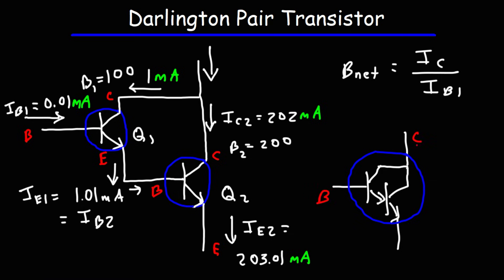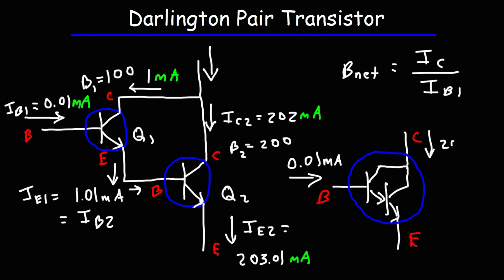So this would be the base, this is the collector, and that is the emitter. We have a current of 0.01 milliamps entering the base of the entire Darlington pair transistor. The collector current — which is the sum of IC1 and IC2 — is a total of 203 milliamps. And the emitter current is the sum of those two, which is 203.01 milliamps.